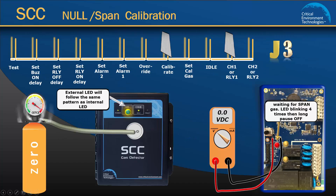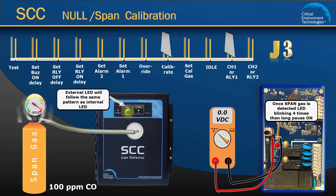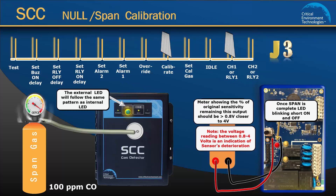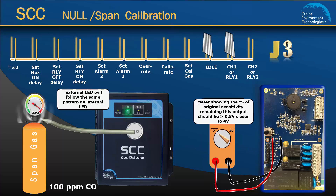To continue with span calibration, attach the span gas cylinder and open the regulator valve fully to allow the span gas to flow over the sensor. When the gas flow is detected, the internal and external LED lights will blink 4 times and then long pause on. Once the gas is detected, spanning will take 2 to 3 minutes. The voltmeter reading will start increasing. When the spanning has completed successfully, the internal LED and external channel 1 LED lights will blink short on and off. The voltmeter will show the percentage of the original sensitivity remaining of the sensor. The reading should be greater than 0.8 volts. The closer it is to 4 volts, the more life there is remaining in the sensor. Remove the jumper from the calibrate position and return it to the idle position. This completes a successful calibration of channel 1.